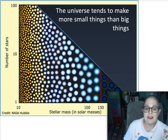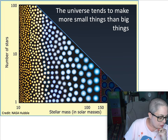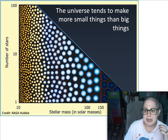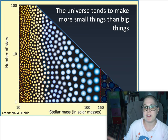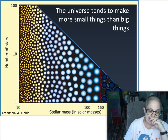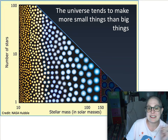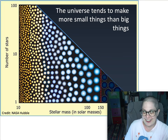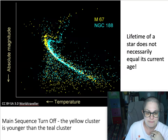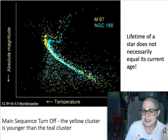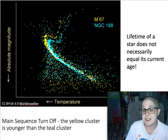For example, if you talk about the lifetime of a human — say it's 85 years on average — that doesn't mean everyone you see is 85 years old. It means everyone has the ability to be 85 years old. Same thing with these stars. The stars down here are the same age as all the other stars, but they have the ability to live for a much longer time.